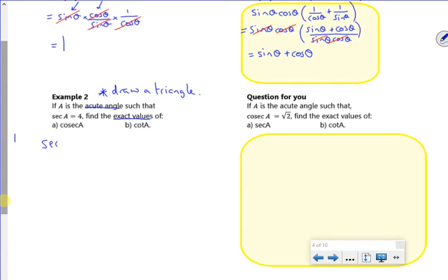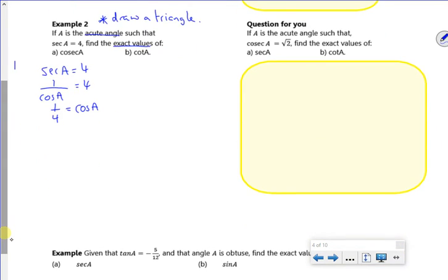Now if I know that secant A is 4, I know secant is 1 over cos. So I'm just switching, I've got a quarter for cos A. So what I want to do first is get my triangle. So for cos, the adjacent is 1, the hypotenuse is 4. So that's going to be, it's usually 4 squared take 1 squared, which is 15, so root 15. There we go.